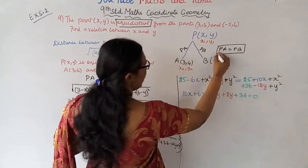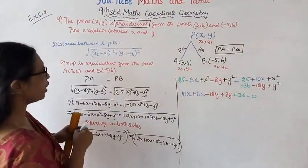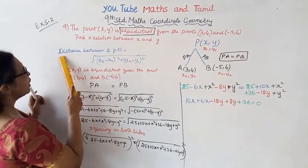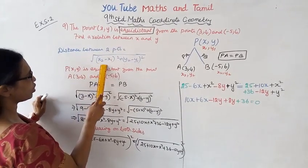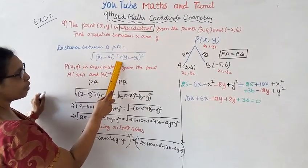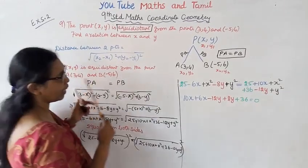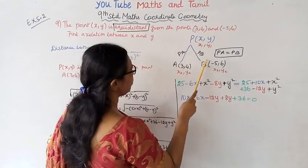PA equals PB. The distance between two points is the square root of (x2 - x1)² plus (y2 - y1)². PA equals PB.